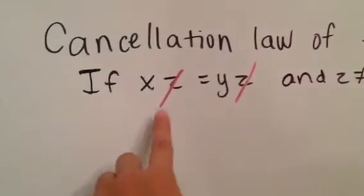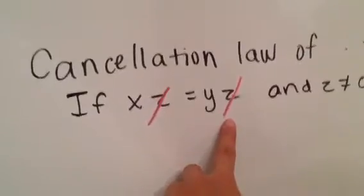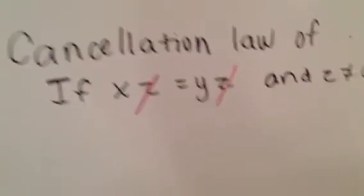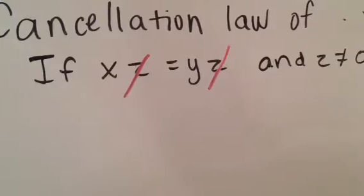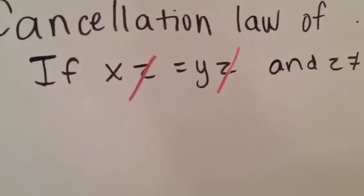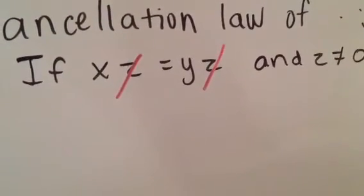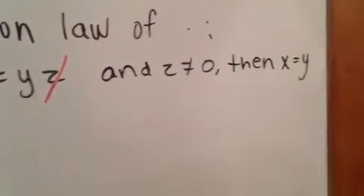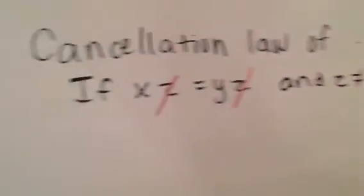You can cancel the z's out as shown here. If z equals 0, then basically it would be 0 equals 0, which could possibly be the 0 property. So we say z is not equal to 0, then x equals y.